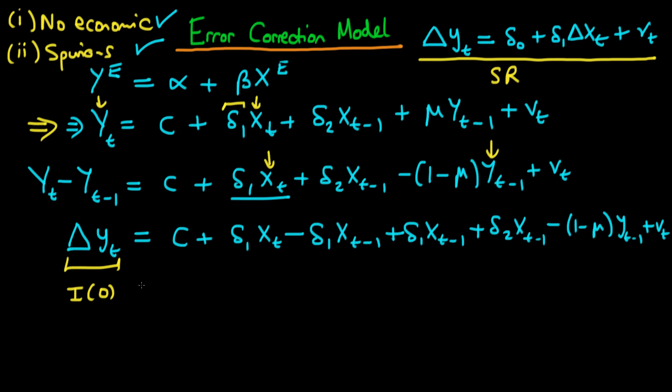Okay which if I write it a bit neater I have c plus delta 1 times the change in xt and I'm actually going to write this whole second half slightly differently. I'm going to write it as minus lambda which is a parameter I've just introduced, yt minus 1 minus alpha minus beta times xt minus 1 plus some error vt and technically I should actually change the constant here so I'm getting a c prime rather than just c.